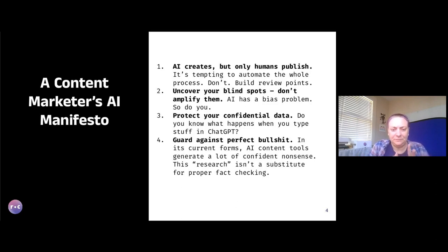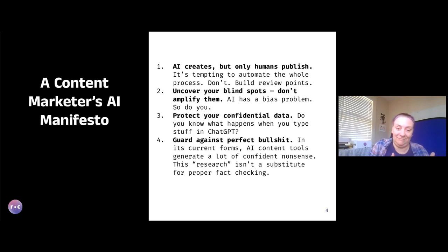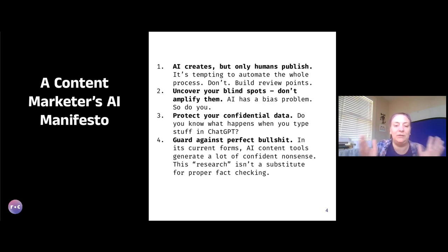The second rule: we talk a lot about the bias in AI, which it absolutely has, because it's as biased as the humans it was trained upon. But you also have a bias problem. I find that if we're smart about this, rather than using AI to amplify my biases, I use AI to help me counter them — to open up and spot for me the patterns that I wouldn't have noticed on my own. You can either use AI to amplify your own bias and make your world even more narrow, or you can use it to open it up.